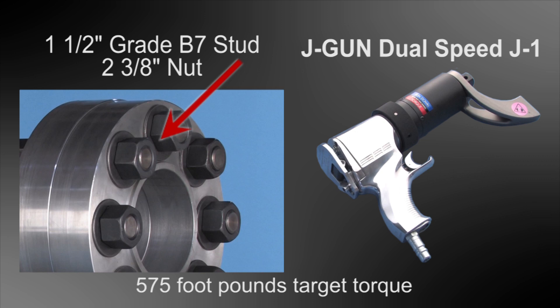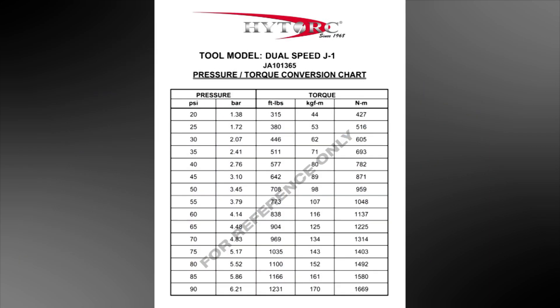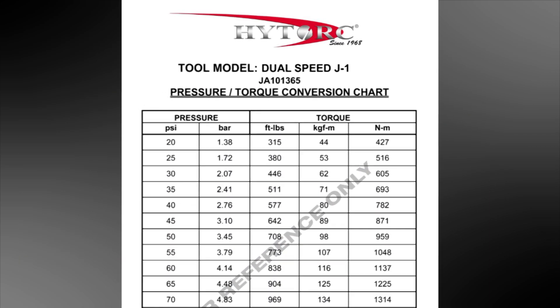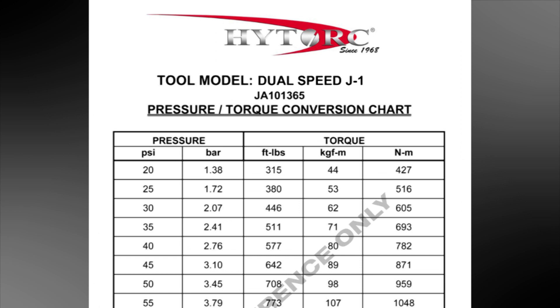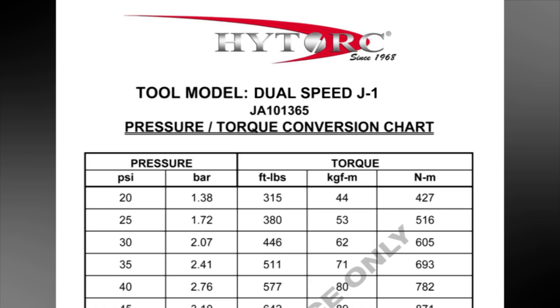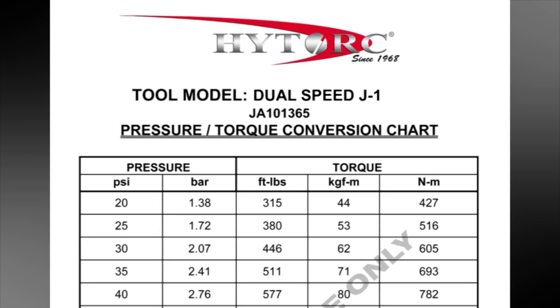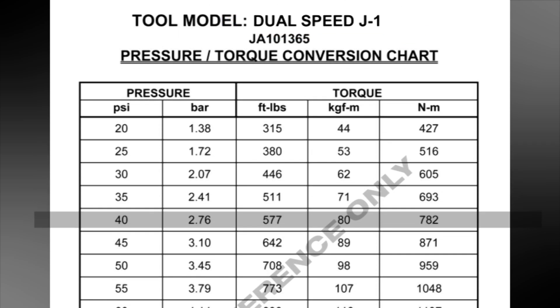Since the turning force of the tool is determined by the air pressure supplied, we must consult the pressure-torque conversion chart for our specific tool to find out how much pressure to apply. In this case, we are using the dual-speed J1. Looking down the foot-pound column, we find 577, which is very close to our target torque. This corresponds to 40 PSI.